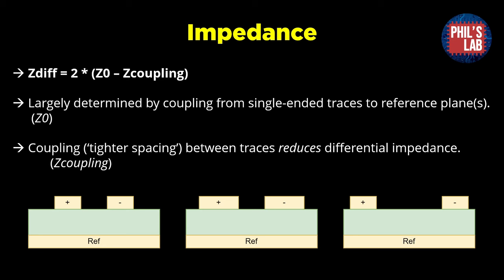The next topic is impedance. Just like single-ended signals — because in essence, differential pairs on PCBs are single-ended signals — they also have an impedance. This is important for PCI Express, USB, and so forth where we need to control impedance. We look at both single-ended impedance (a single trace with respect to a reference plane) and differential impedance. The differential impedance is simply two times the single-ended line impedance minus the coupling between the positive and negative parts of the pair.